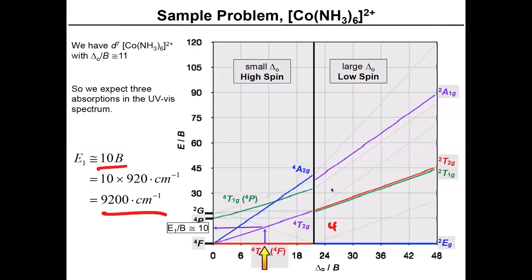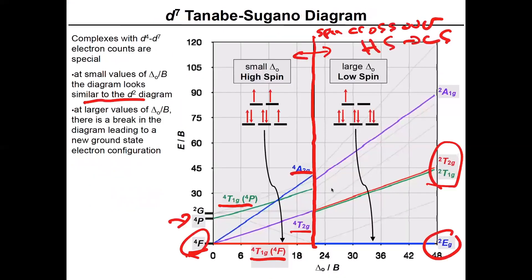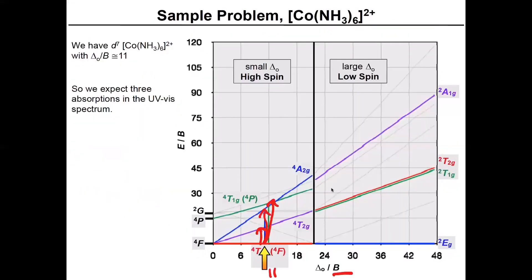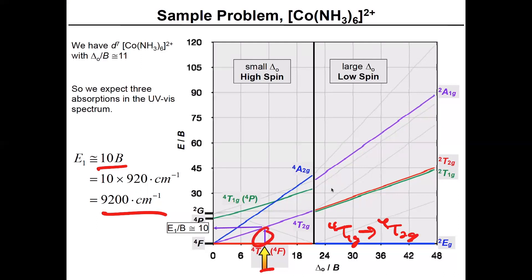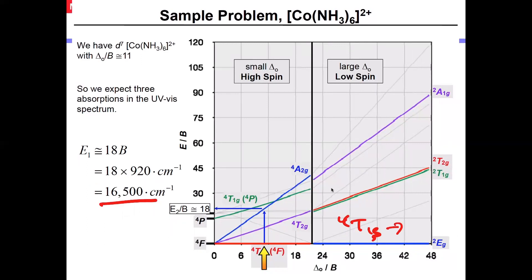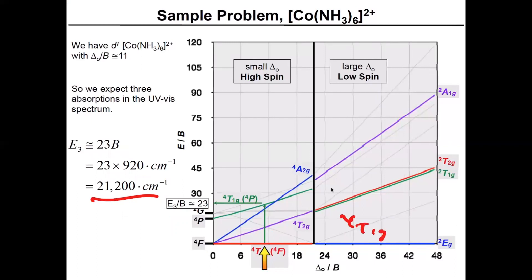And then just to be very consistent here, the first transition is going to be a quartet T. In this particular case, I've blocked it here. I can't remember what it is. I have to look back in the other diagram. Yeah, so it's a quartet T1g. So the transitions here are going to be a quartet T1g to a quartet T2g. That's the lowest energy transition. Then the next transition is going to be a quartet T1g to a quartet A2g. That's the next spin allowed transition. Then the third one will be the quartet T1g to now the quartet T1g. But then because this is derived from a different free ion term, we actually put it in parentheses that it's actually derived from the quartet P.